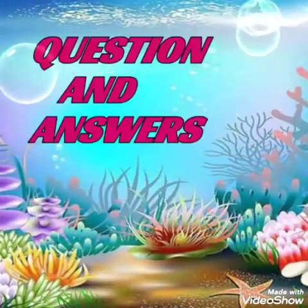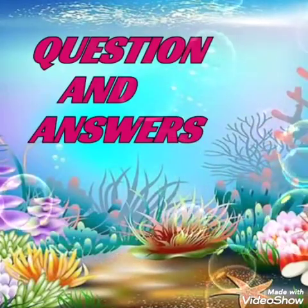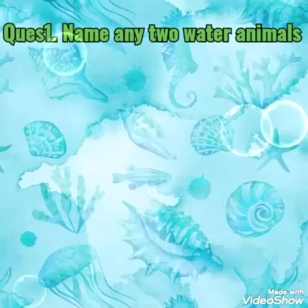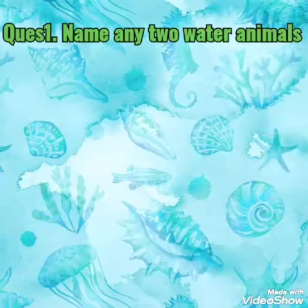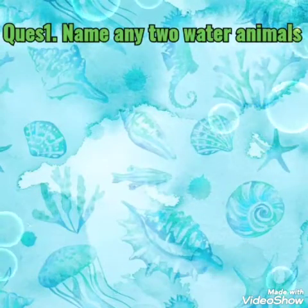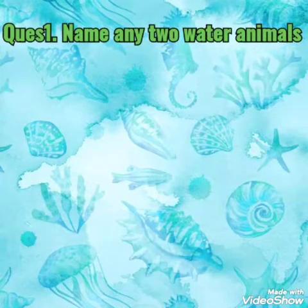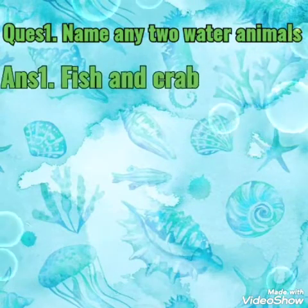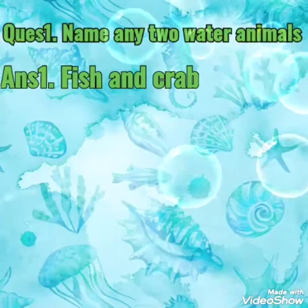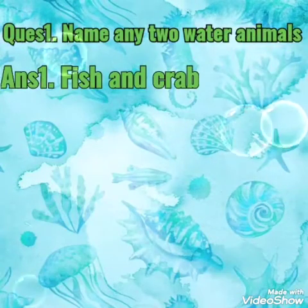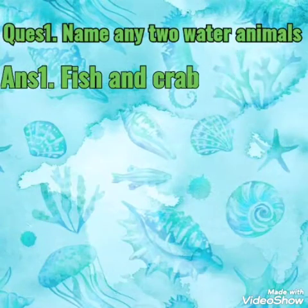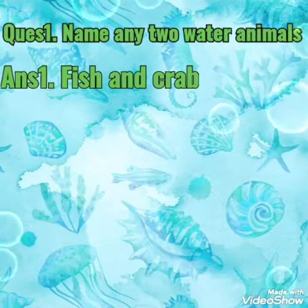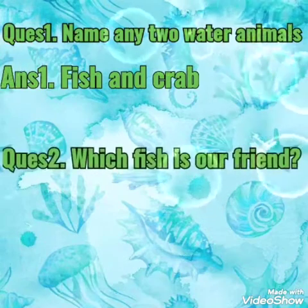Now children, we will do some question and answers. First question is: name any two water animals. You have to write two names of water animals. The answer is fish and crab. F-I-S-H, Fish, and crab, C-R-A-B, Crab.